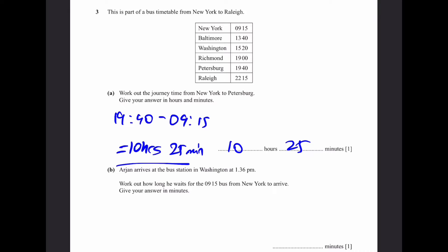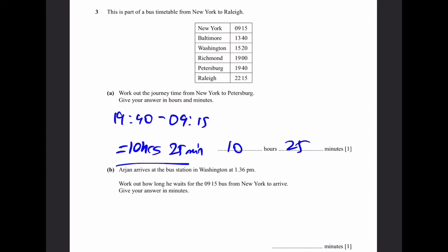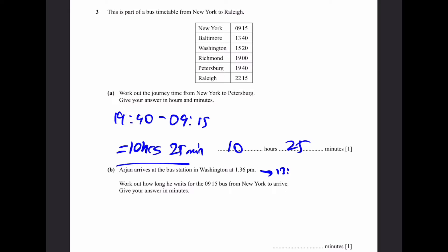Part B: Arjun arrives at the bus station in Washington at 1:36 PM. Work out how long he waits for the 9:15 bus from New York to arrive. Give your answer in minutes. So he's there at 1:36 PM. This can be converted to 24 hour time as 13:36.